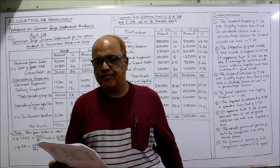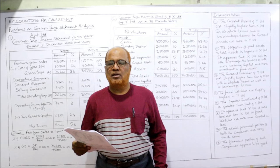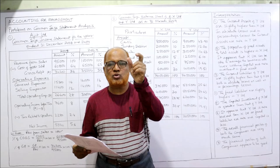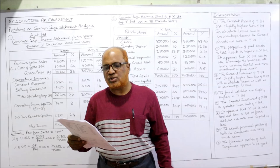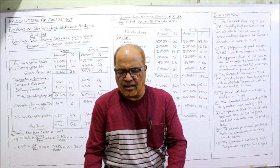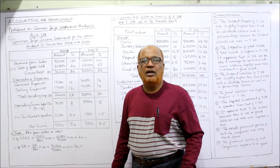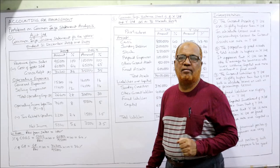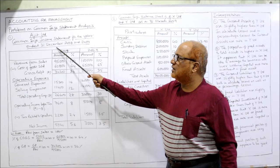Now see the first problem: from the following income statement of Ajit Limited, prepare a common size statement for the years ended 31st December 2008 and 2009. We need to prepare a common size income statement. The data given includes revenue from sales, cost of goods sold, gross profit, operating expenses, general expenses, selling expenses, total operating expense, operating income before tax, tax related to operations, and net income.